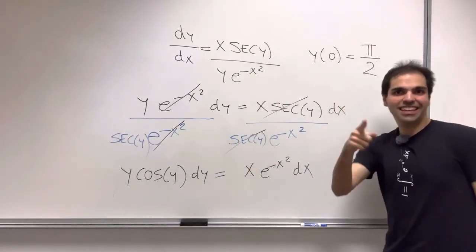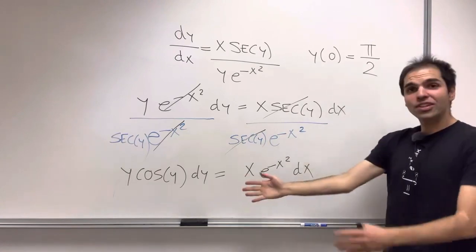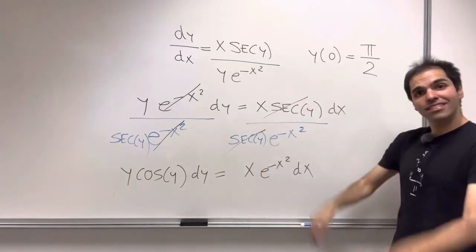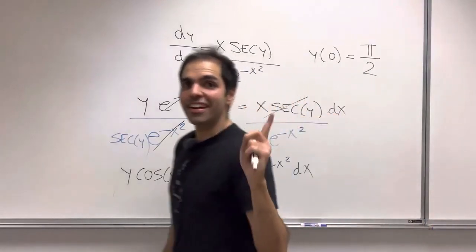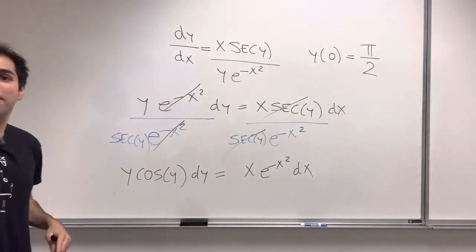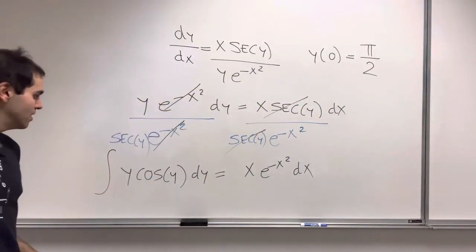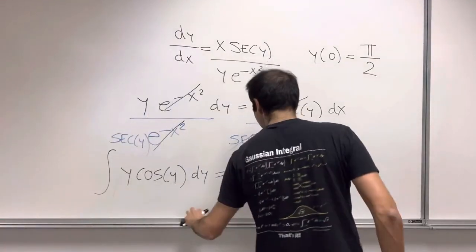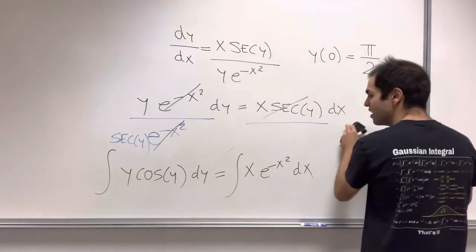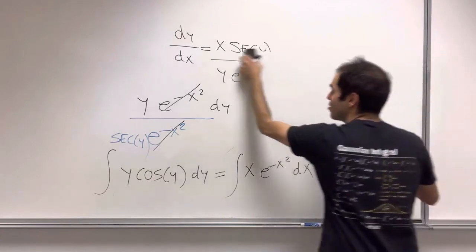All right. So that's good. We put all the y's on one side, all the x's on the other side. And so the next step is simply to integrate. So integral of y cosine of y equals integral of x e to the minus x squared.